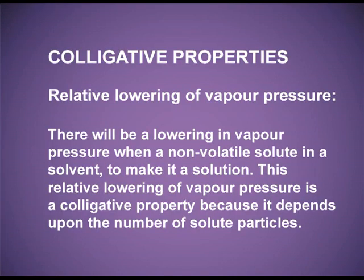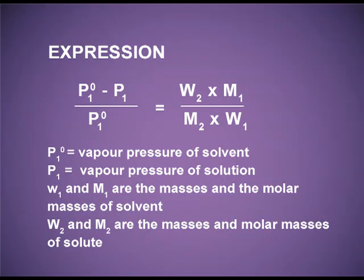Just now in the beginning, I have explained that there will be a lowering in the vapour pressure when we mix a non-volatile solute in a solvent to make it a solution. This relative lowering of vapour pressure is a colligative property because it depends upon the number of solute particles. Mathematically, (P°₁ − P₁) / P°₁ = (W₂ × M₁) / (M₂ × W₁).